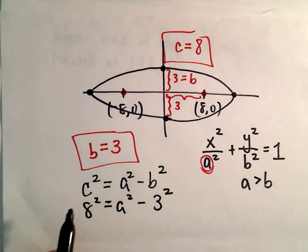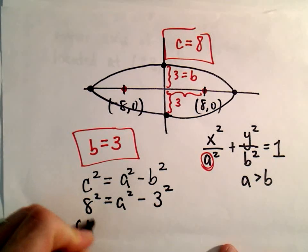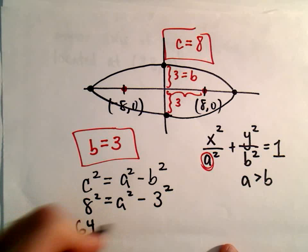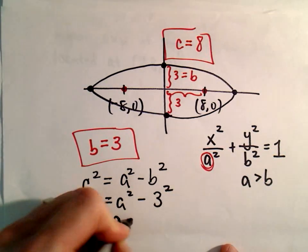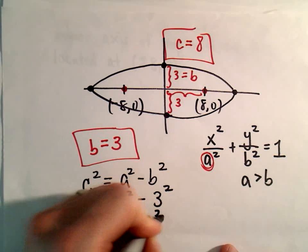We're going to get 64 on the left side. We'll have a² minus 9, so I'm going to add 9 to both sides. That'll equal a².